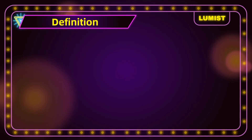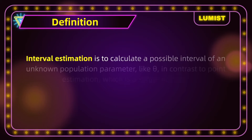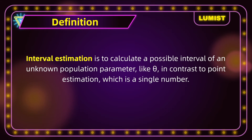Well then how can we measure that uncertainty? We can build up a range based on the estimate, which in our example is the observed x-bar, and that is called an interval estimation. So an interval estimation is to calculate a possible interval of an unknown population parameter like theta, in contrast to point estimation which is a single number.